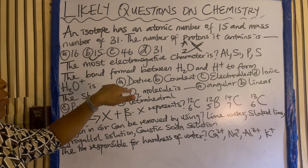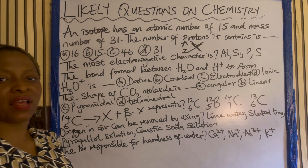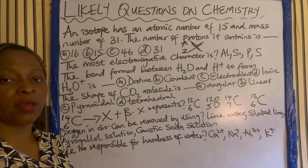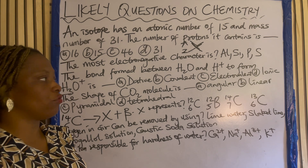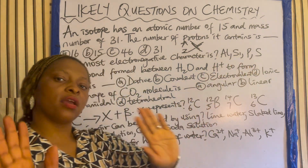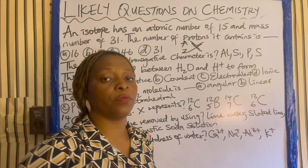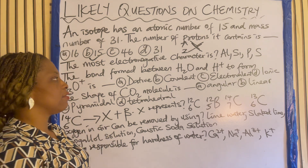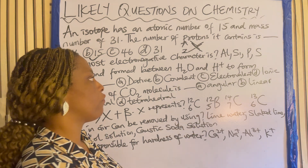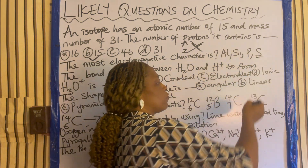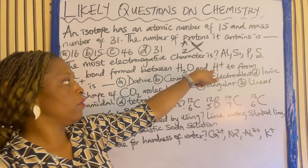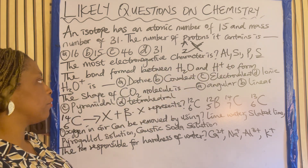The most electronegative element among the choices is — aluminum, silicon, phosphorus, or sulfur? Electronegativity talks about the ability to attract electrons, and it increases across the period. Aluminum comes before silicon, before phosphorus, and before sulfur. So sulfur is the most electronegative, while aluminum is the most electropositive among the elements listed.